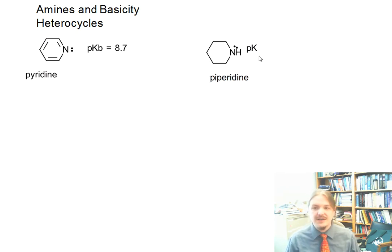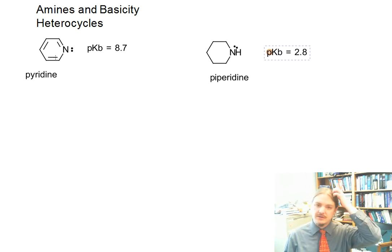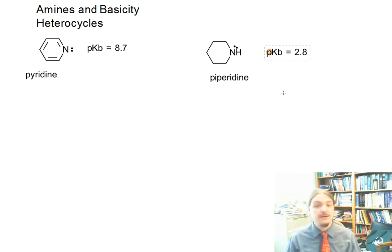Pyridine, the fully saturated version, has a pKB of 2.8. So piperidine is significantly more basic. And in general, heterocycles are a little bit less basic than their fully saturated analogs.